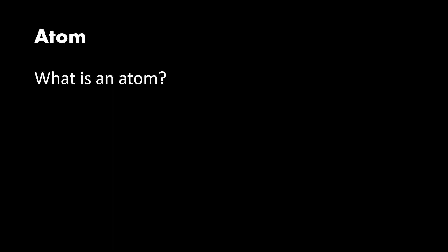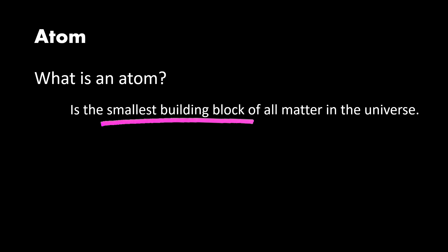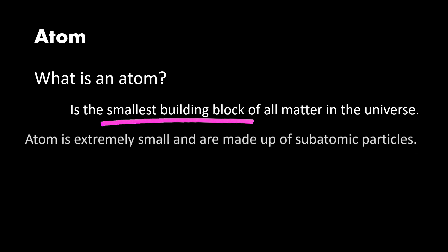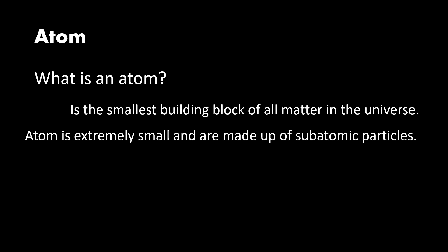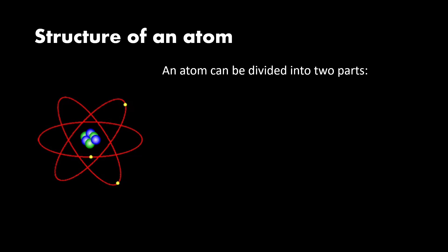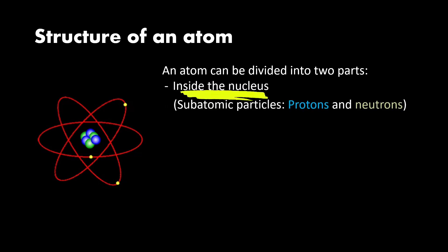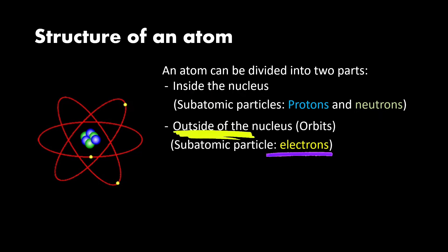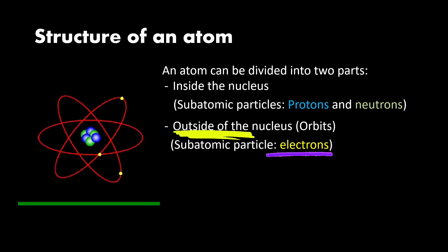What is an atom? An atom is the smallest building block of all matter in the universe, and atoms are extremely small and are made out of subatomic particles. An atom can be divided into two parts — inside the atom and outside the atom. Inside the atom consists of subatomic particles such as protons and neutrons, and outside the nucleus consists of electrons which orbit around the nucleus.